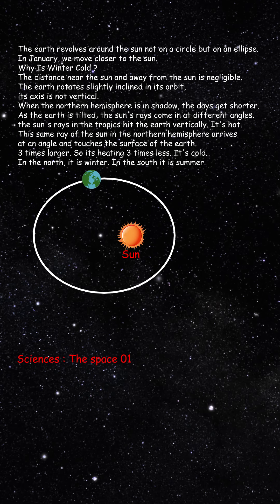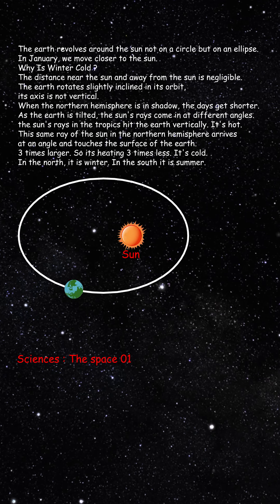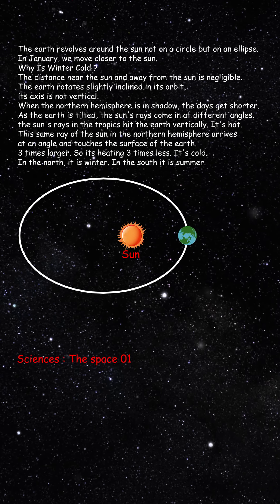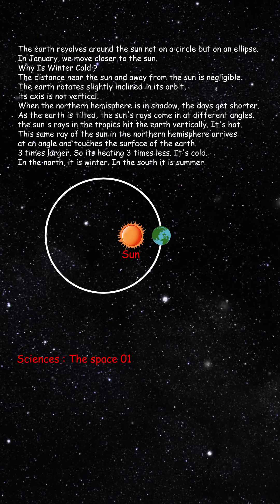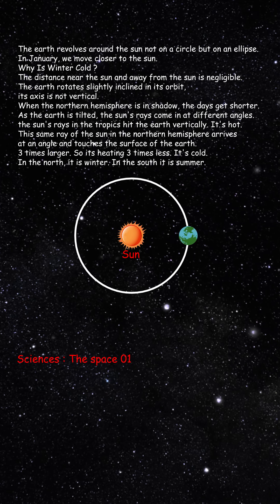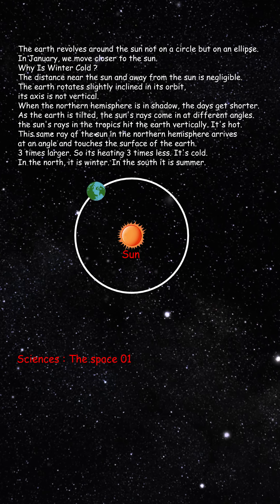The Earth revolves around the Sun not on a circle but on an ellipse. In January, we get closer to the Sun. Why is winter cold? The distance near the Sun and away from the Sun is negligible.